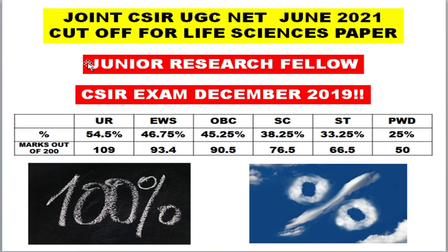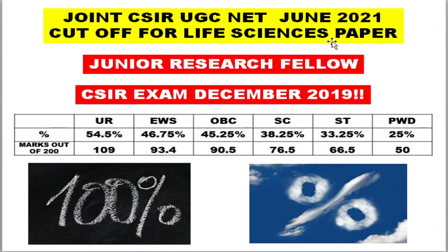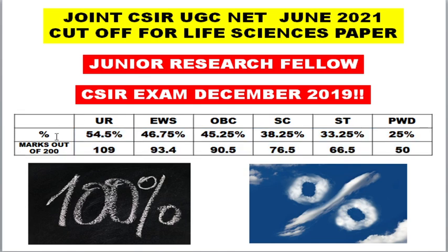Before entering the actual cutoff, let me clarify: with respect to December 2019, the cutoff was released in percentage wise only. Here we are talking about only life sciences paper and JRF. For JRF and life sciences, the cutoff was released in percentage wise — so for the unreserved or general category, the cutoff is 54.5 percentage.